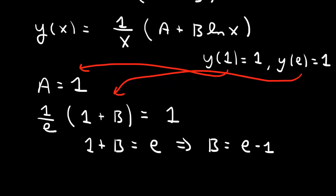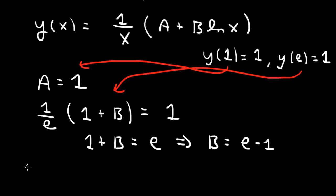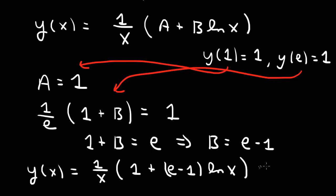And so we can put together our solution here. So y of x is equal to 1 over x times A, 1 plus B, e minus 1 times log x. And that would be valid for x positive. That's the solution of the Cauchy-Euler equation.